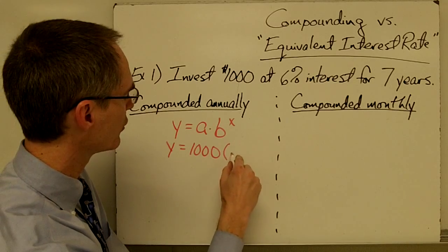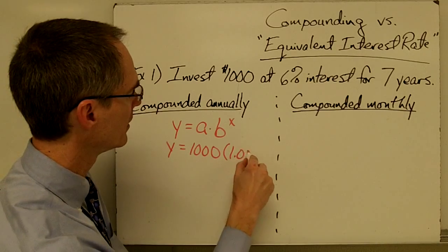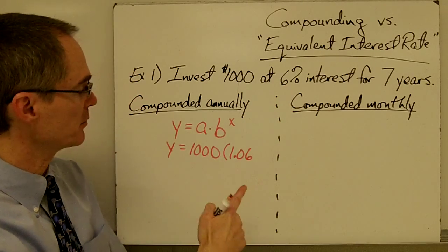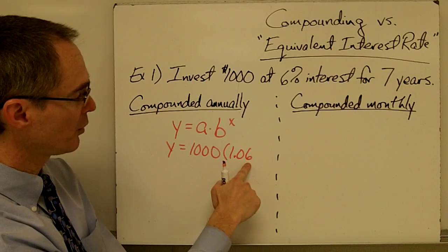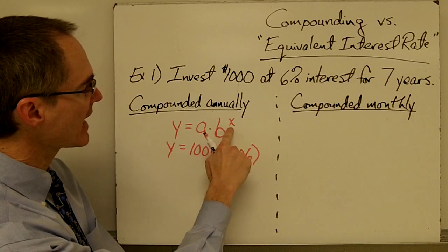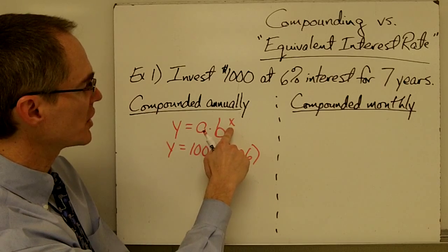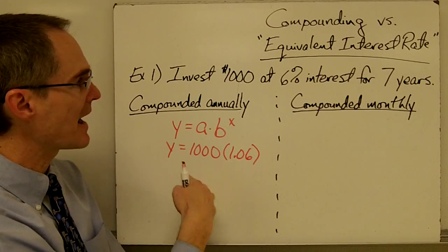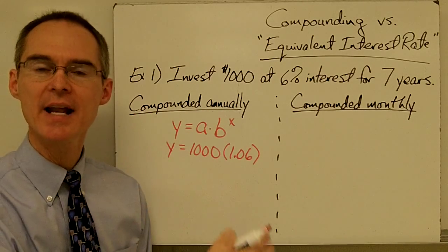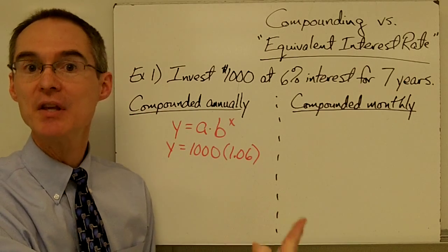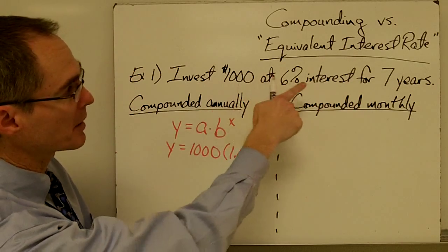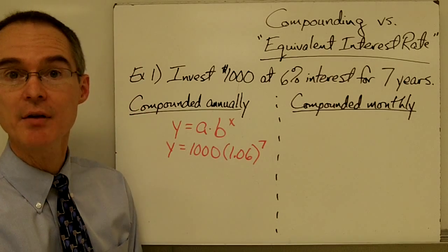So my growth factor would be one plus 0.06 — because 0.06 is six percent expressed as a decimal — which gives me 1.06. That's my growth factor. Then X, my exponent, is just how many times I'm going to be compounding my interest. Compounding annually means I calculate interest at the end of each year, so if I'm investing my money for seven years, this value is just going to be seven.